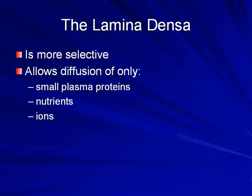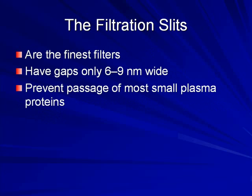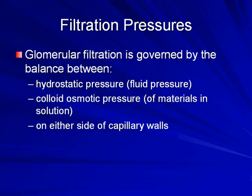The lamina densa is more selective — it allows diffusion only of small plasma proteins, nutrients, and ions. The filtration slits are the finest filters, with gaps of about 69 nanometers in diameter, preventing passage of the smallest plasma proteins.